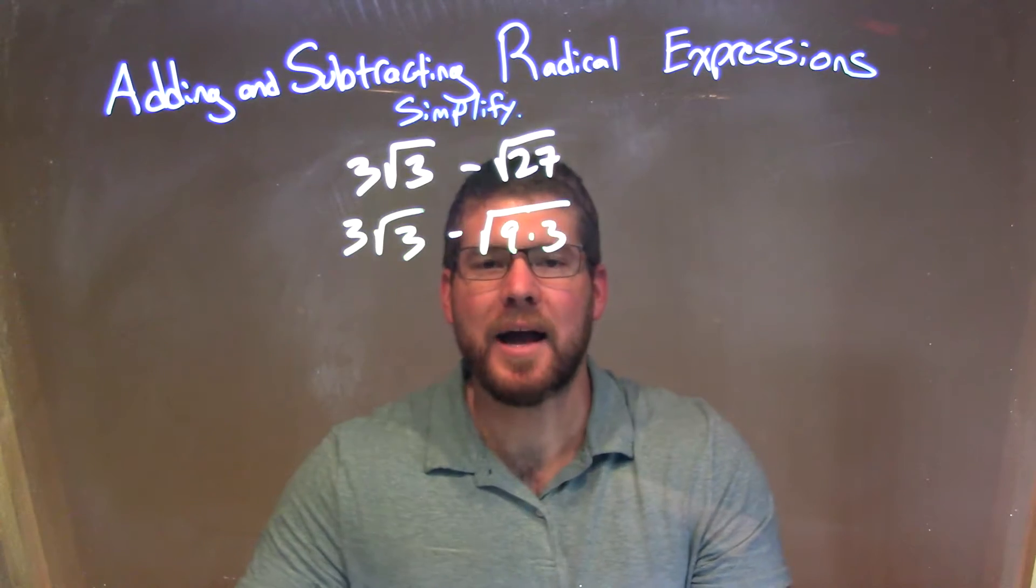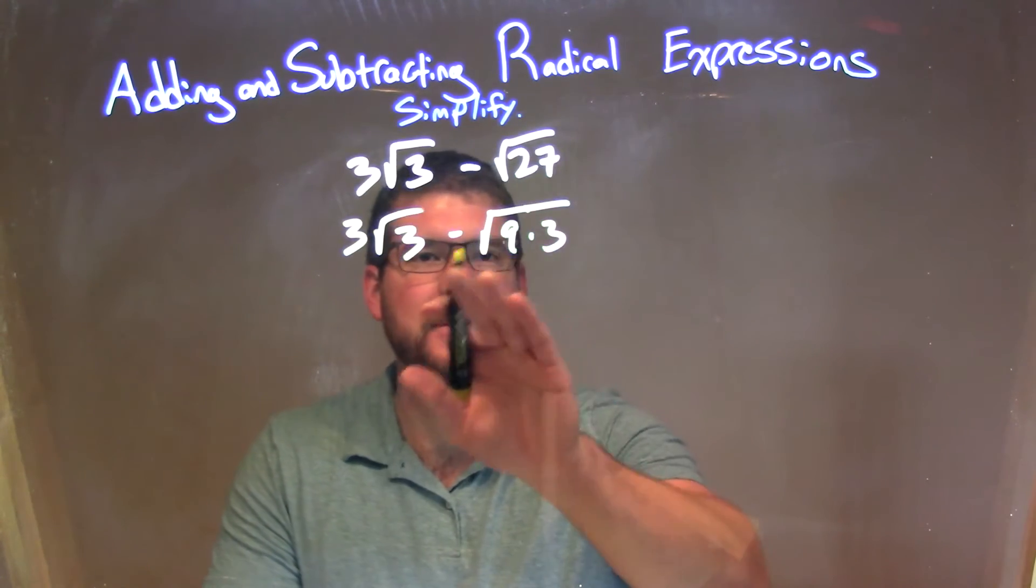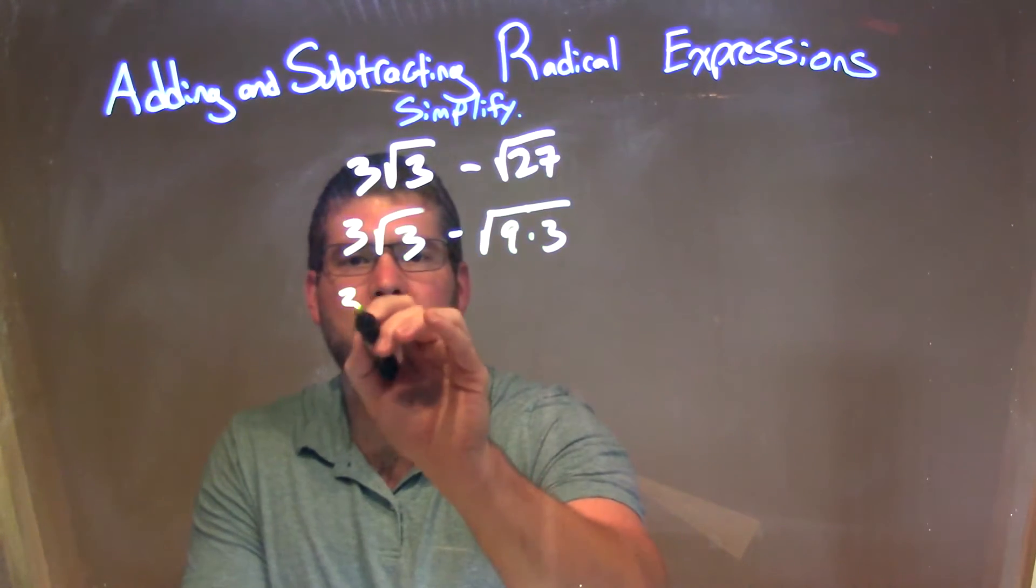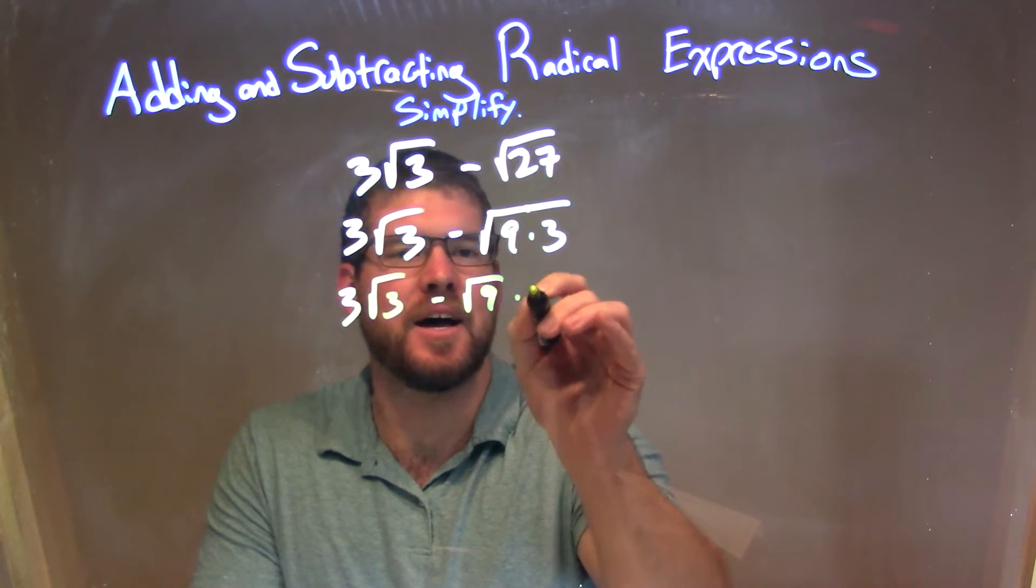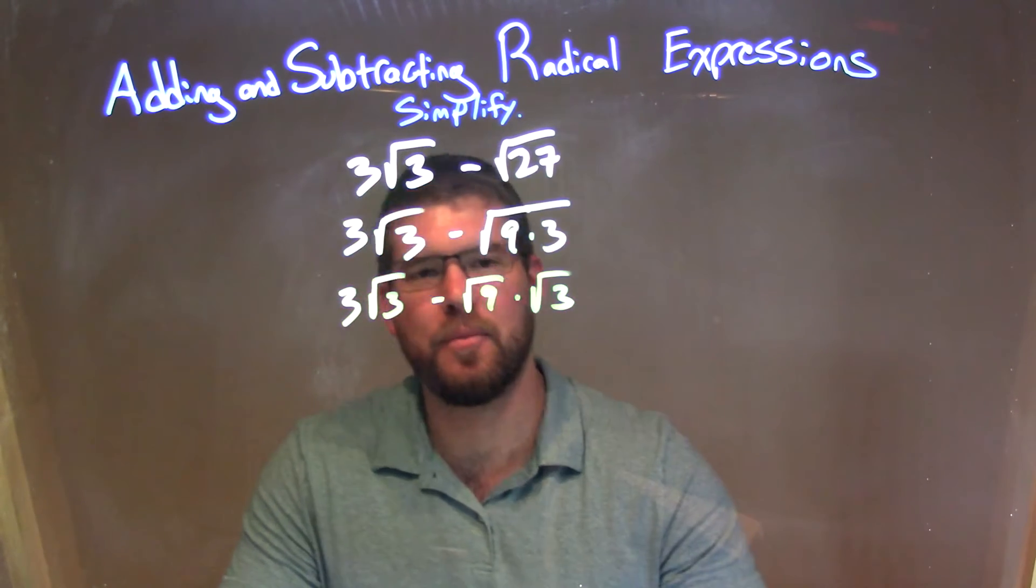Since I have it as 9 times 3, I can break that apart to be two different square roots there. So we have 3 square root of 3 minus the square root of 9 times the square root of 3. We're allowed to do that with multiplication.